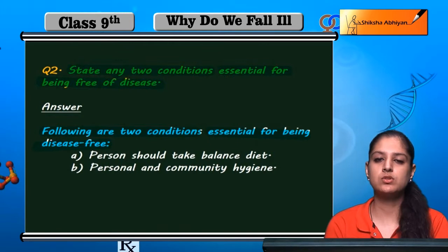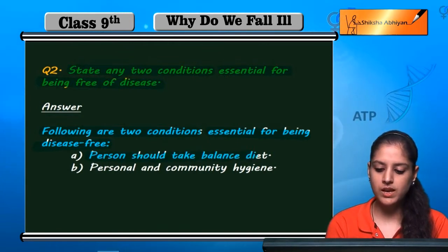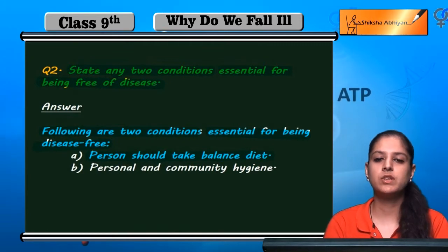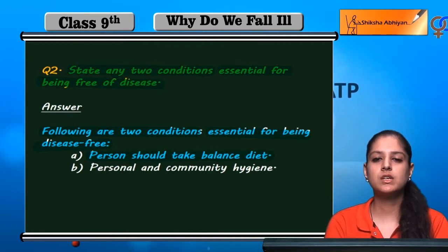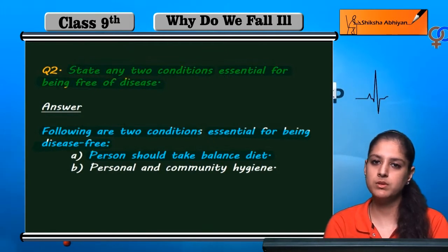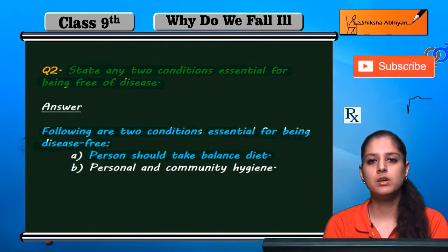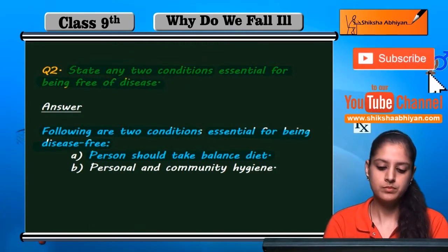First: a person should take a balanced diet. Jo diet le raha hai person woh balanced honi chahiye. It should contain all the nutrients that are required for any person. Usme koi bhi nutrient extra ya kam nahi hona chahiye — sare nutrients proper amount mein lene chahiye.